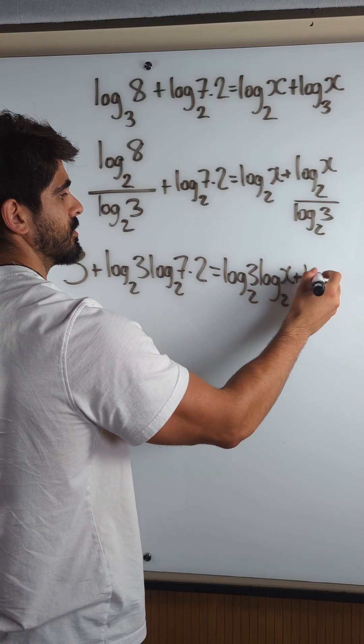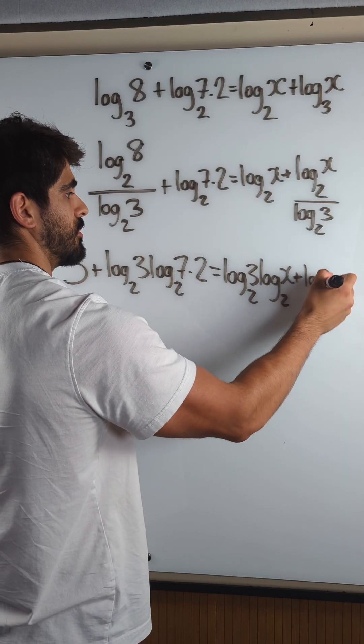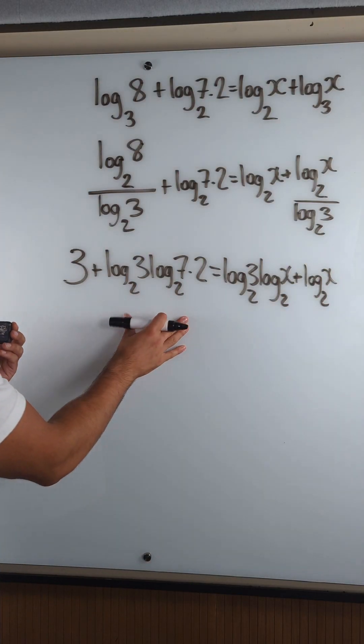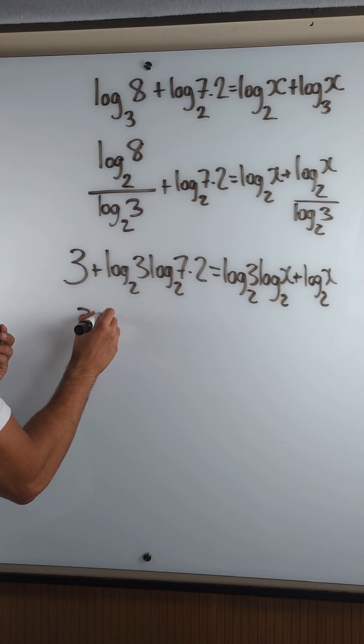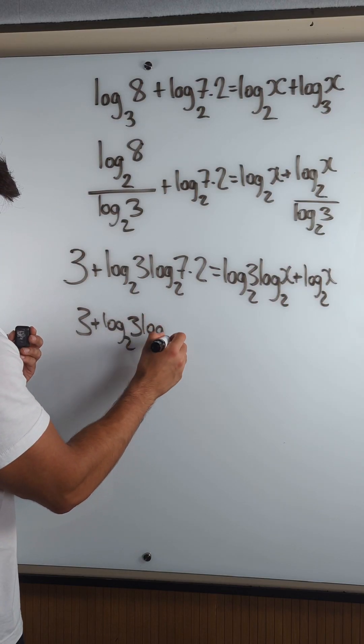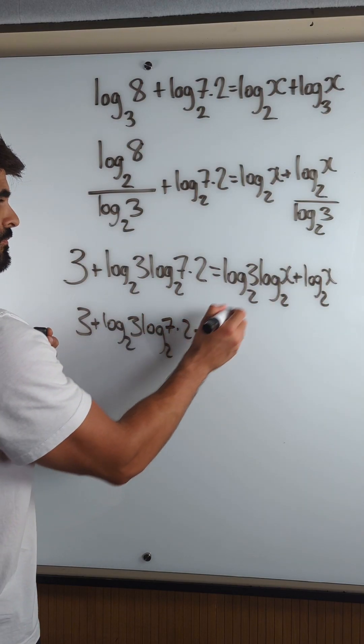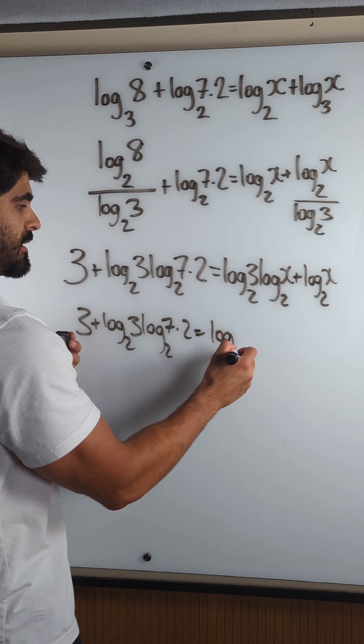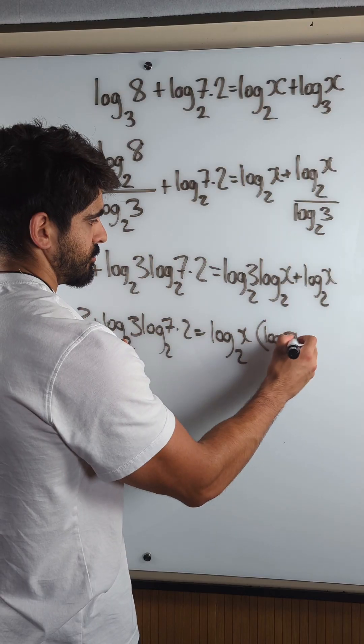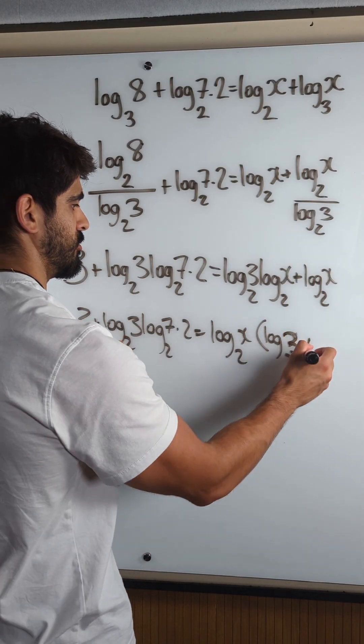Now these are the same, right? So we can collect the like terms. This just is what it is: 3 plus log 2, 3 log 2, 7.2. Factorize out log base 2 of x. We get log base 2 of 3 plus 1.